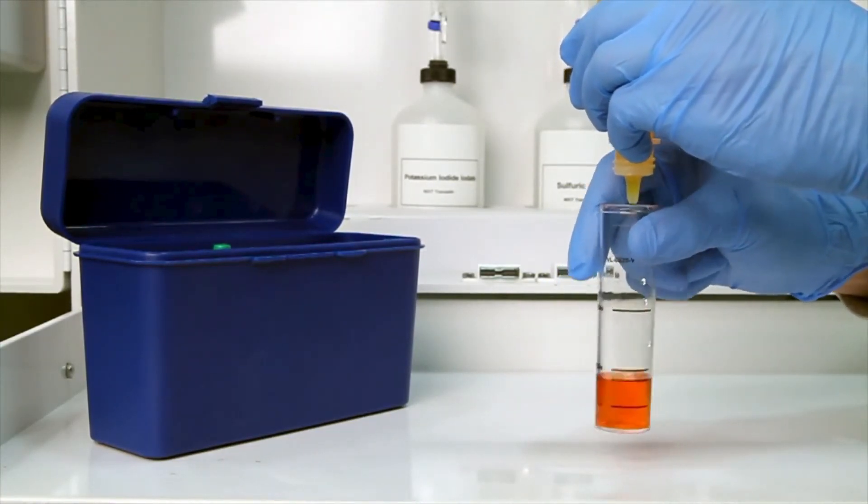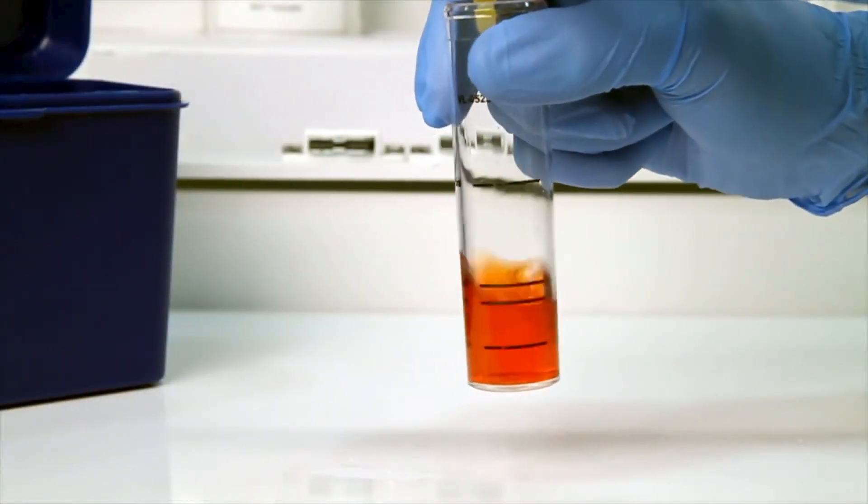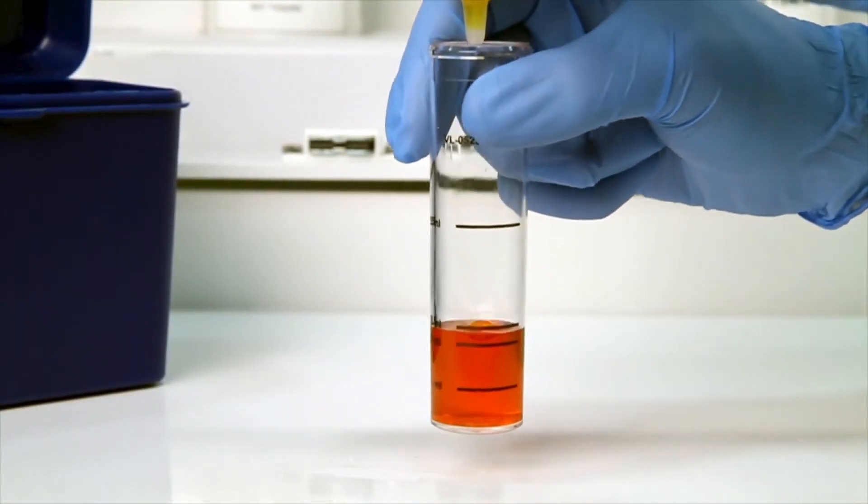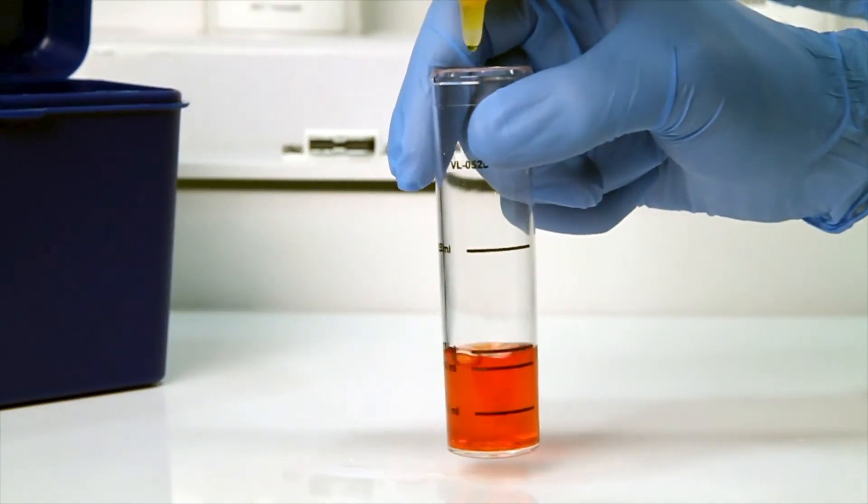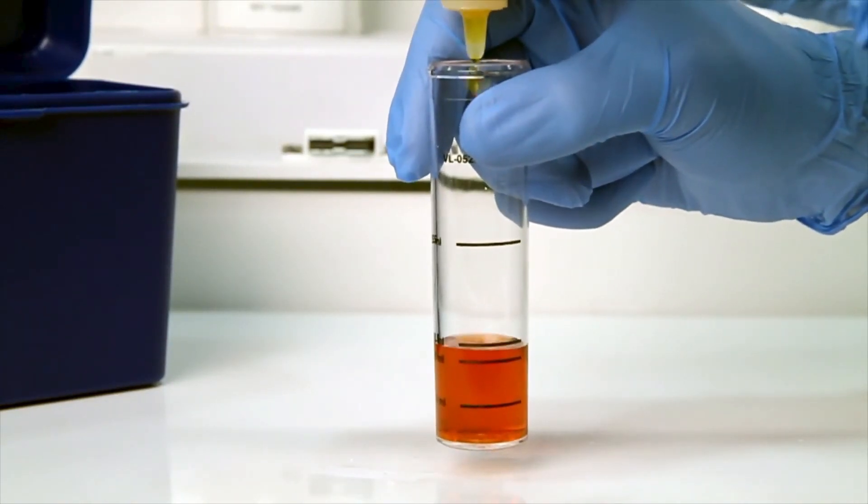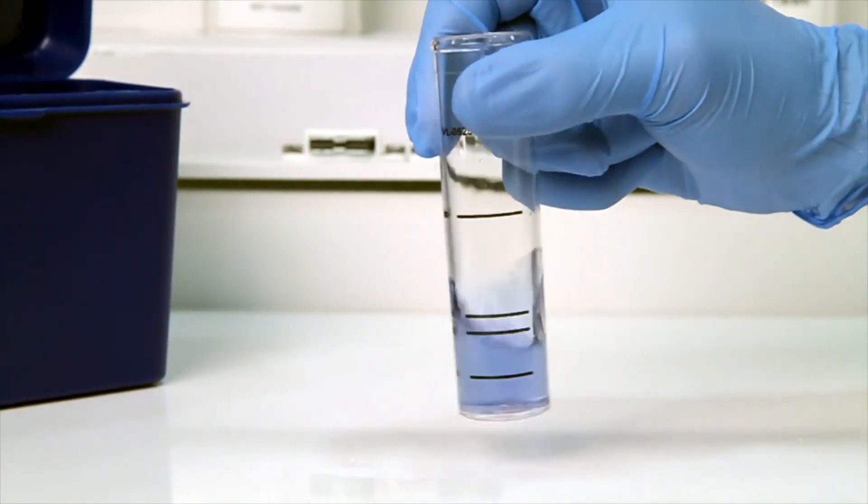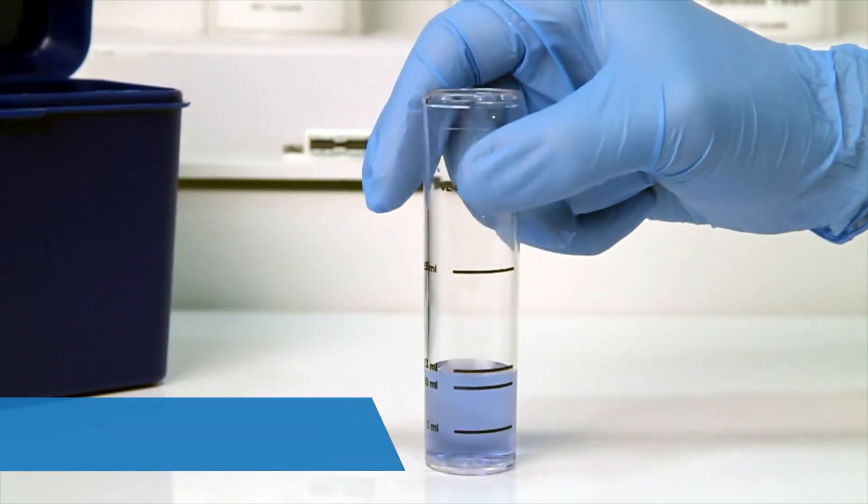The bottle contains a dropper tip, so it's important to hold the bottle vertically to get a consistent drop size. After the addition of each drop of titrant, you want to swirl the vial to make sure the sample is properly mixed. Count the number of drops during this step. The titration is complete when the sample changes from orange to blue.